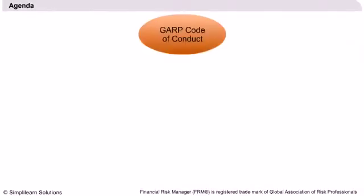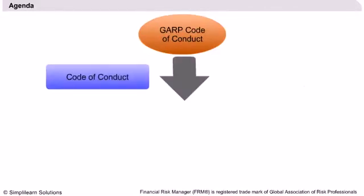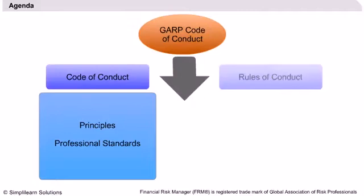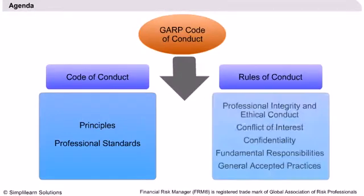The GARP Code of Conduct will be discussed in two parts. First is the Code of Conduct, which lists various principles and professional standards to be followed by a GARP member. The second part deals with the rules of conduct and will be subdivided into five headings.